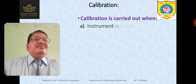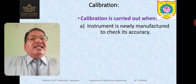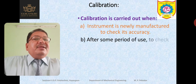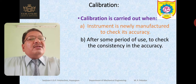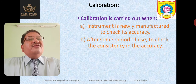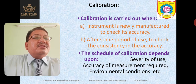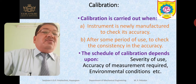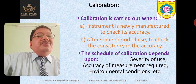Calibration is first carried out when the instrument is newly manufactured to frame the scale and check accuracy. After some period of use, calibration is done again to check consistency in accuracy — whether accuracy is maintained or not. The schedule of calibration depends upon the severity of use. If the accuracy required is more, then calibration should be more frequent. If less accuracy is required, we can reduce the frequency of calibration.